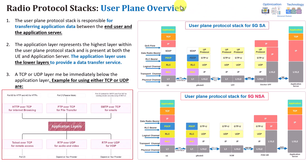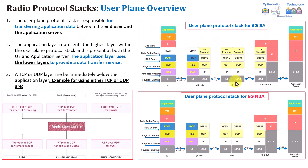As you can see from this figure, this is the user plane overview for standalone and non-standalone. The user plane general protocol stack is responsible for transferring the application data. For example, if you have application data at the UE side and you would like to transfer it between the end user and the application server, this is the user plane responsible for transferring the data between the UE and the application server.